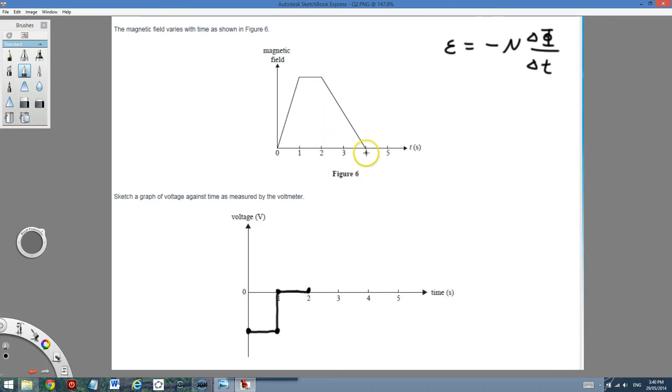Now, from 2 to 4 seconds. From 2 to 4 seconds, the magnetic field decreases. The rate of change of magnetic field over time is minus. Remember, in math, this is positive gradient. This is negative gradient. Between 2 to 4 is negative.